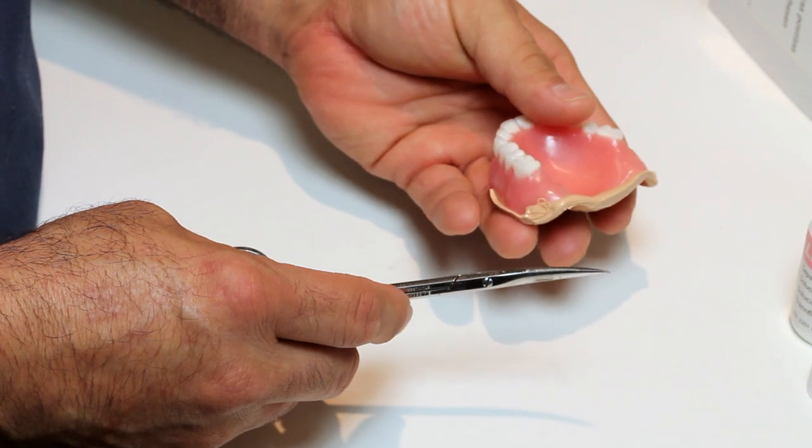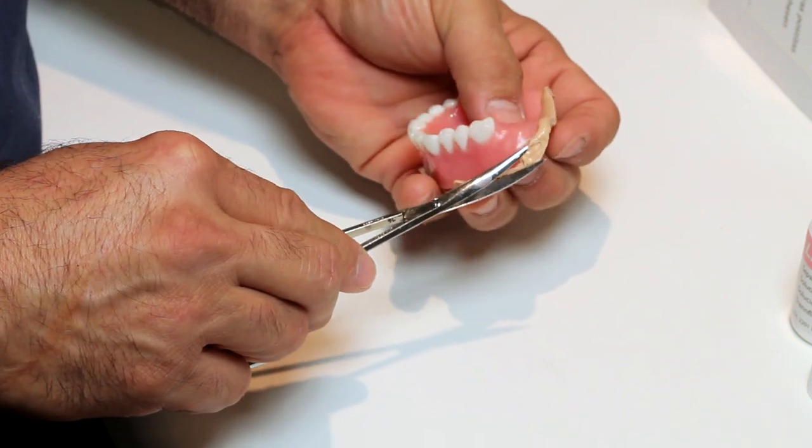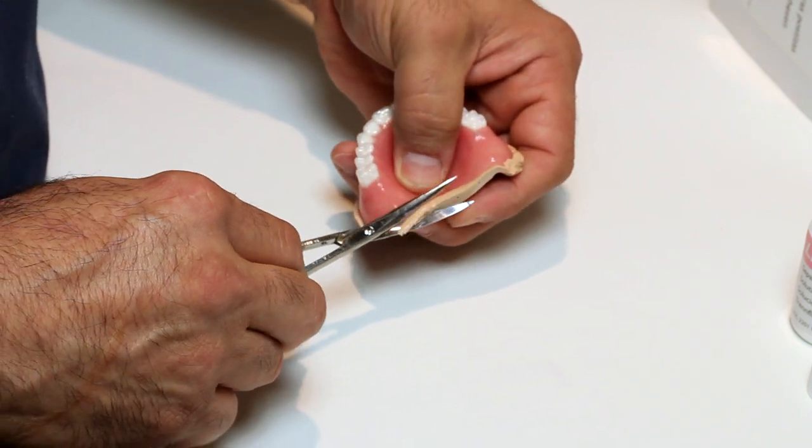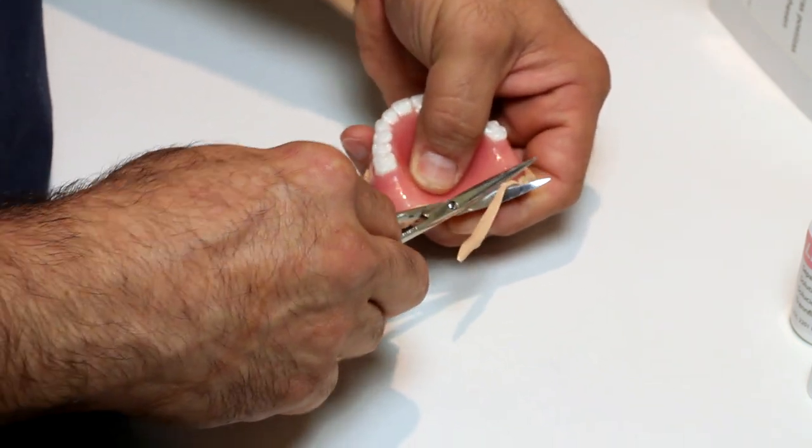Upon receiving an impressed upper or lower denture for relining, trim the excess impression material around the perimeter of the denture to make for a cleaner process.